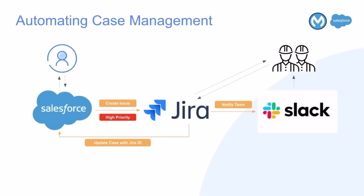Let's review a simple use case. When a high priority case is created in Salesforce Service Cloud, we want to create a JIRA issue so that the engineering team can immediately work on the case and provide timely support to our customers. We also want to send the engineering team a Slack message to notify them of this high priority issue, and the JIRA case ID is then updated on the Salesforce case record.